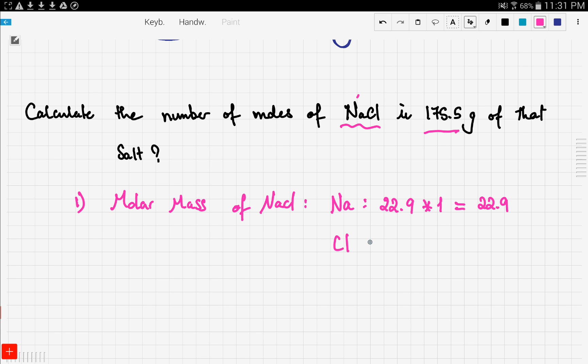Now Cl, we only have one Cl, so we go back to our periodic table and check for the atomic mass and that's gonna be 35.45, and we only have one so we get 35.45. Now we add these up we get 58.45 grams per mole.